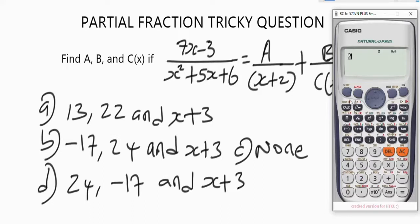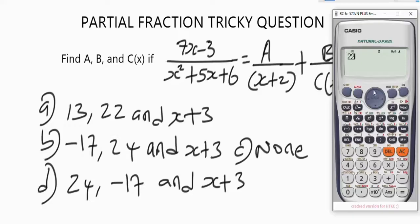First, let's store 2 as X. Press shift, then store, then X. Now let's store A as 10. Press 10, shift, store, then look at the A button. Now let's store 22 as our B. Press 22, shift, store, then look at the B button.